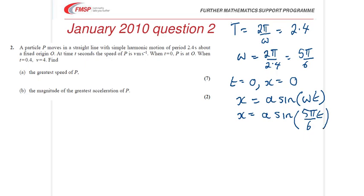They tell us one more thing. When t is 0.4, v is 4. Now, you've got an expression for v in terms of x in SHM, that's v squared equals ω squared into a squared minus x squared, but that's no good here, because they're telling you that v is 4 when t is 0.4.